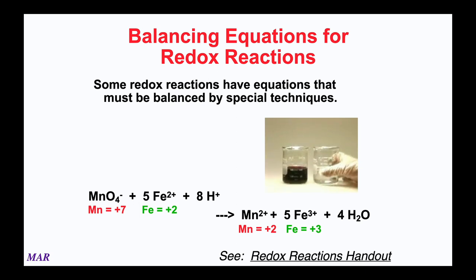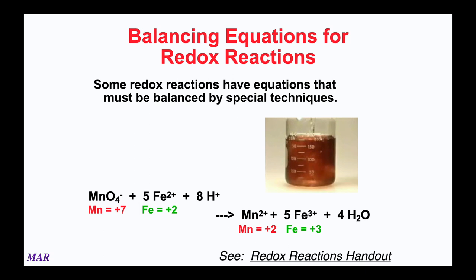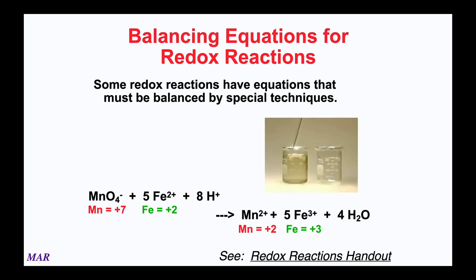The purple solution is aqueous potassium permanganate; the colorless solution contains iron two plus ions. When combined, a redox reaction occurs — permanganate is reduced to manganese two plus and iron is oxidized to iron three plus. Iron three plus has a slight yellow color, so the solution is nearly clear, but the purple permanganate is totally gone. Redox reactions are really powerful. In the companion handout online I recommend you check out the redox reactions handout, which goes through the balancing steps in great detail.